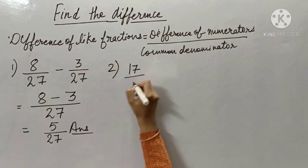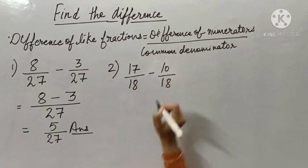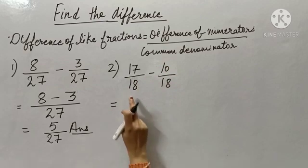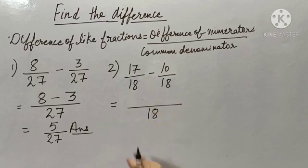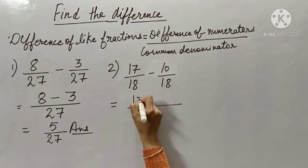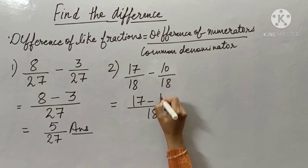17 upon 18 minus 10 upon 18. Again my common denominator is 18, so I will be writing here 18. Numerator of this fraction is 17 minus, what is the numerator of this fraction? 10.